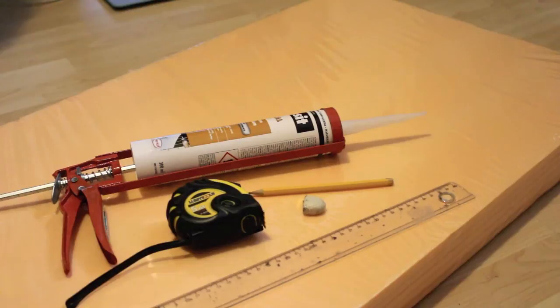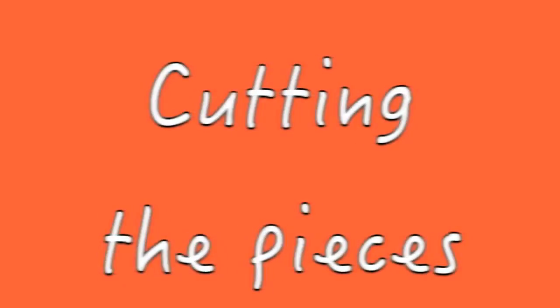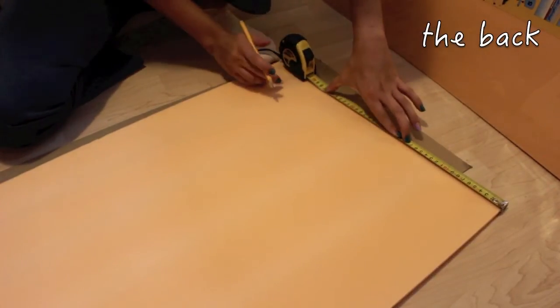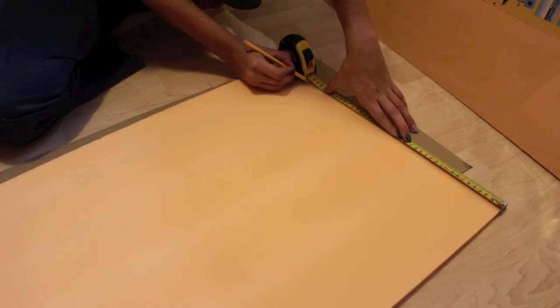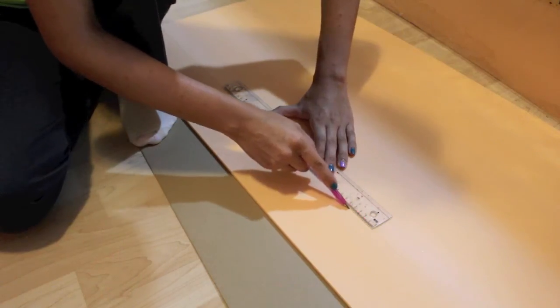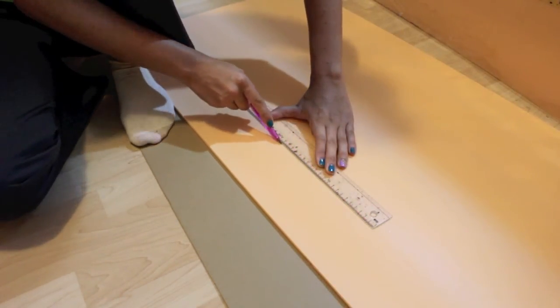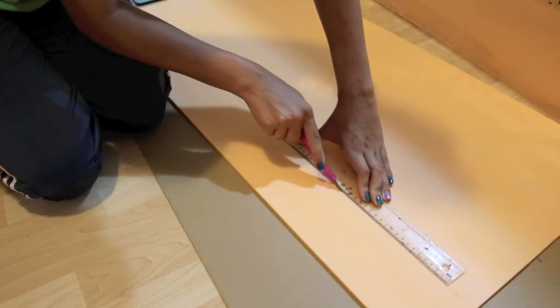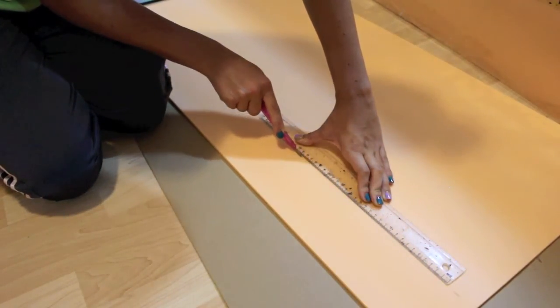I started measuring the backboard. I want mine to be one meter long and 40 centimeters wide, but you can make yours however you want. Then I'm taking an exacto knife and a ruler and cut the excess part. I highly recommend having a ruler as your guide because you want your line to be as straight as possible.